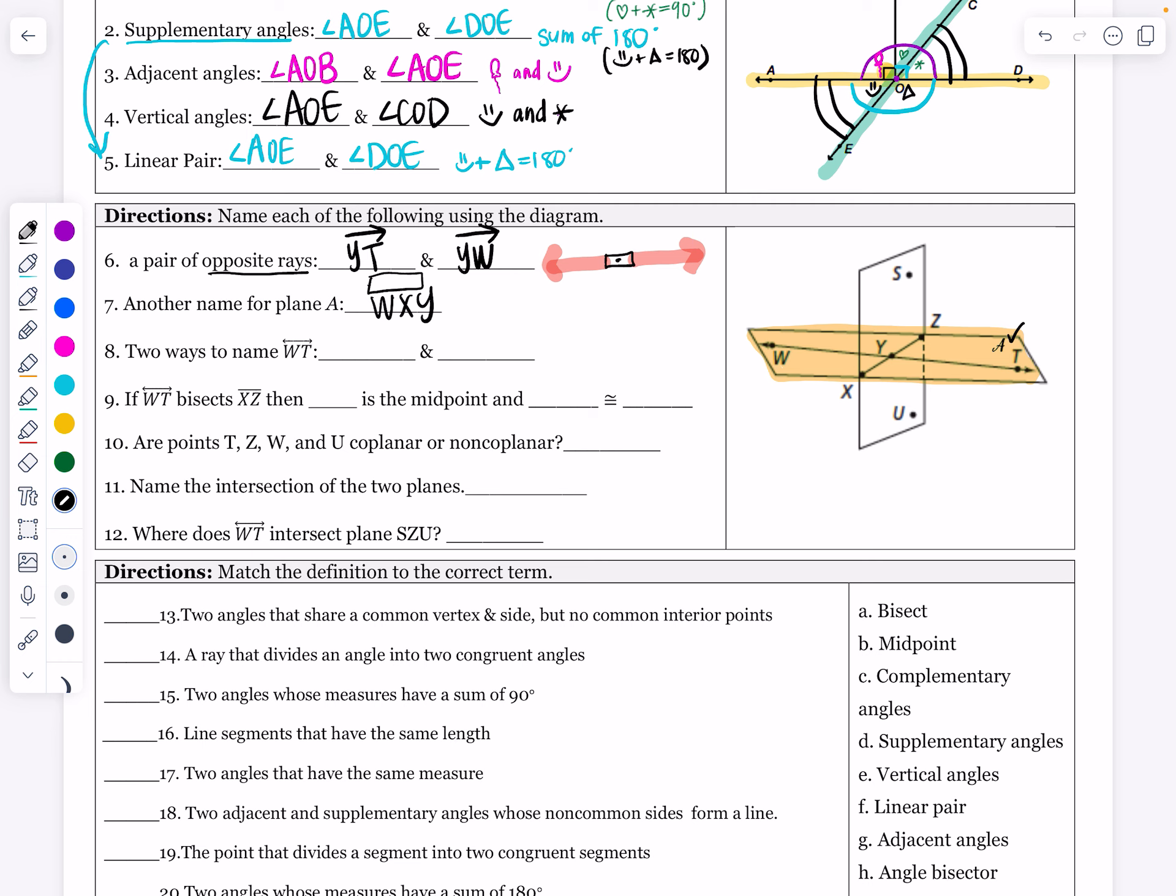Two ways to name line WT. Let's find WT first - there's the line WT. The easy way to do this is the UNO reverse card, you just flip it around. Lines can be named forwards and backwards. So we flip it around and draw the line above it: TW. If WT works, then TW must work. We can also use any lowercase letter written next to the line that's not a point, but they don't have one on that line. You can use another point on the line, so like WY would work, or YW, or YT.